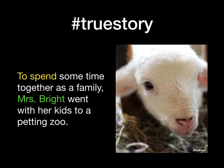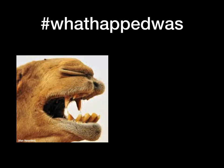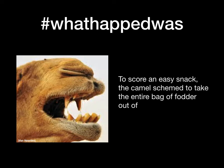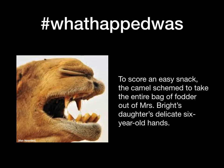The story continues. 'To score an easy snack, the camel schemed to take the entire bag of fodder out of Miss Bright's daughter's delicate six-year-old hands.' The subject now is that dastardly camel — he's the one scheming, and he's also the one planning to score an easy extra snack. This is an infinitive phrase because it simply starts with the word 'to' plus a verb: 'to score.'